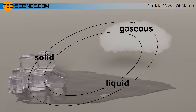The change in state from solid to liquid is referred to as melting, and the reverse process is solidification or freezing. Vaporization refers to the phase transition from the liquid to the gaseous state, and the reverse process is called condensation.